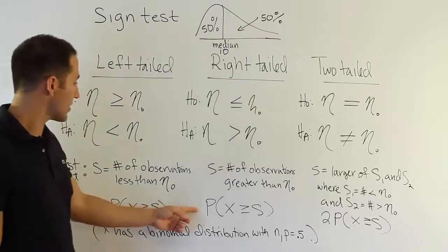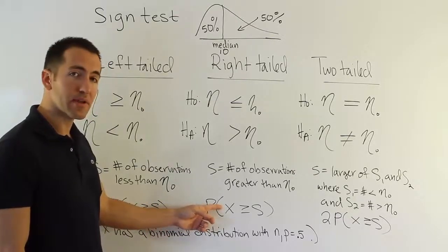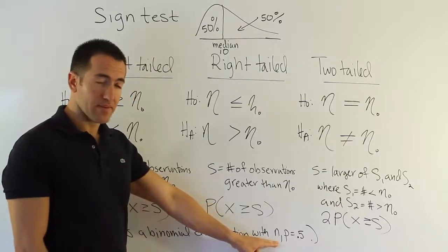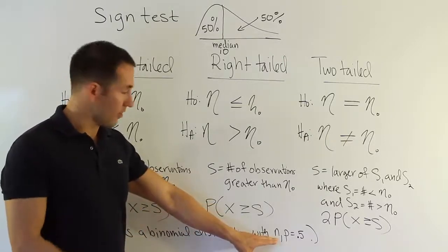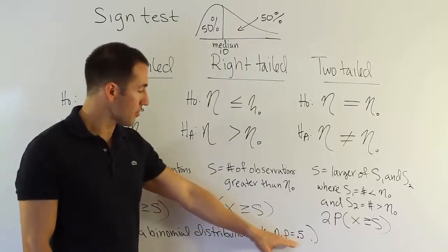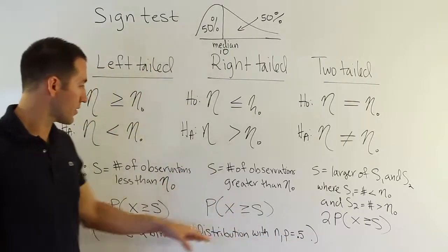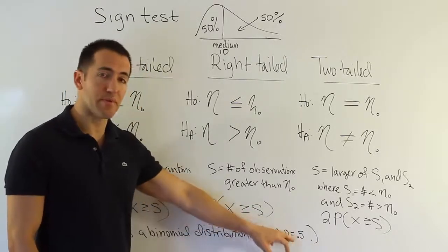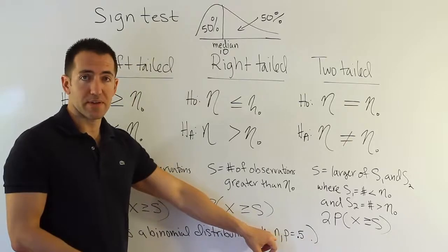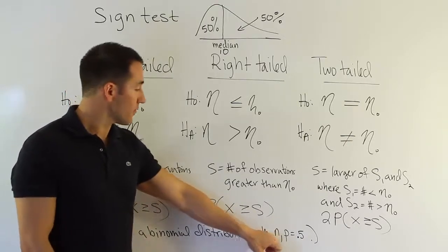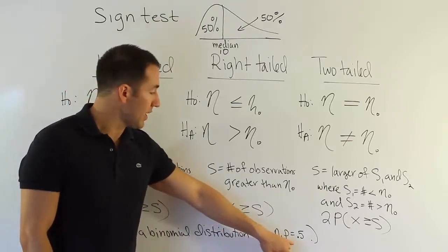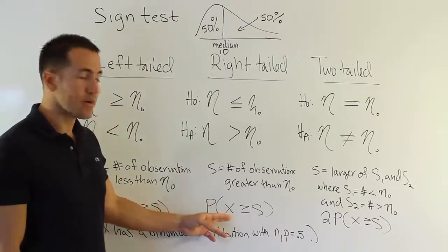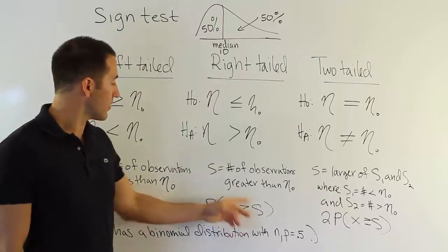And then from there, I used something here, which gives you the p-value. And the p-value is going to be the probability that a binomial random variable, with n being the number of times I visited to the Taco Bell, and p, the probability being 0.5, so a binomial random variable with those properties, with those parameters, n, which would be the number of visits I took to the store, to the Taco Bell, and p being 0.5.